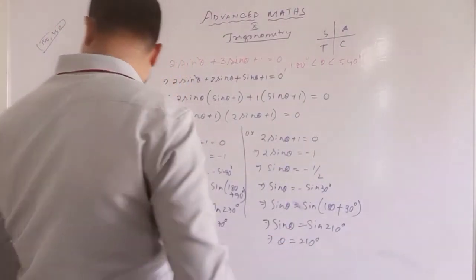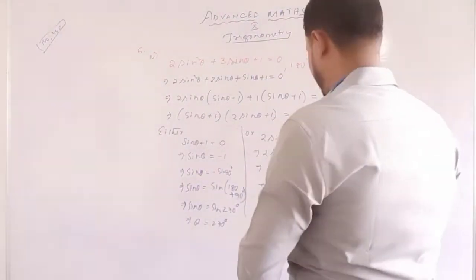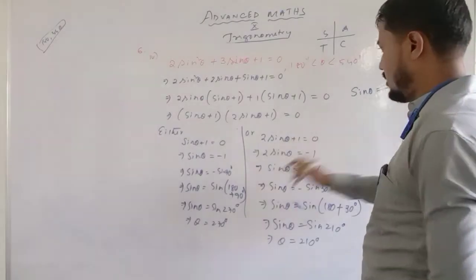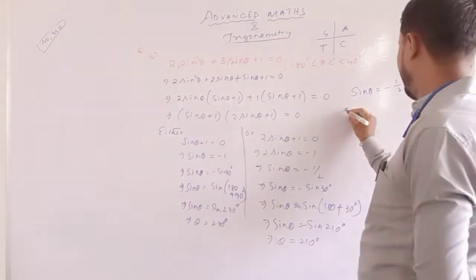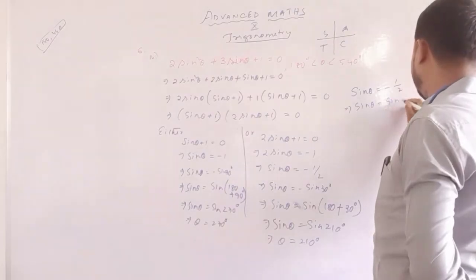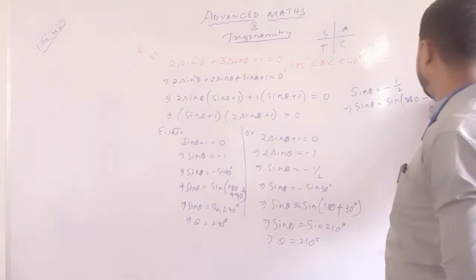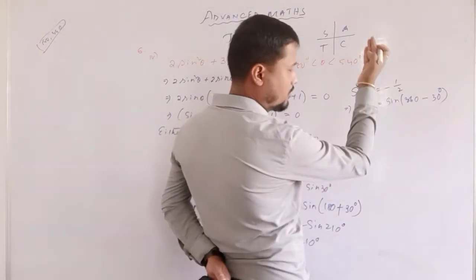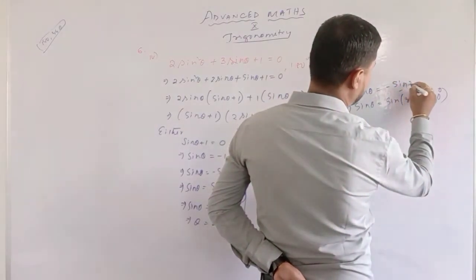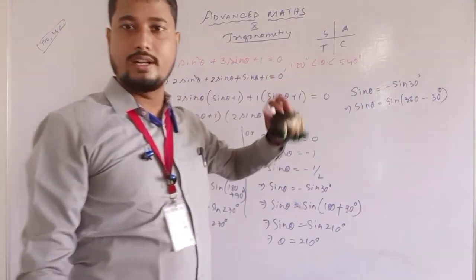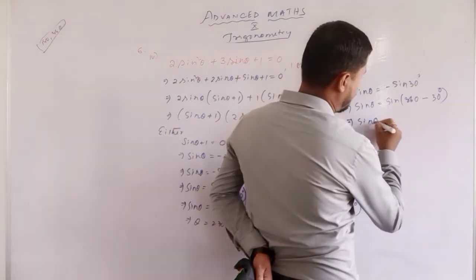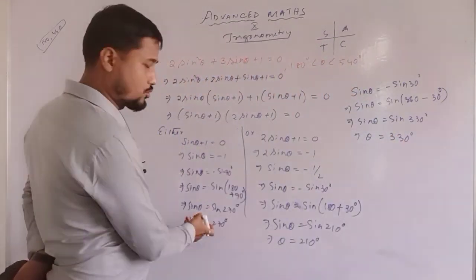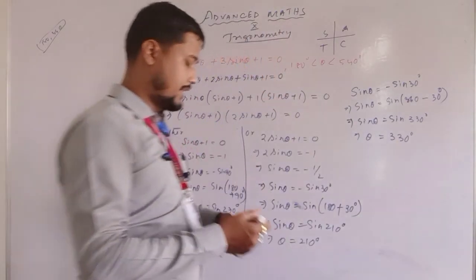So we have 210°. Now for the next value: sinθ = -1/2. One value is 270°, another is 210°. Another: sinθ = sin(360° - 30°) = sin(330°) — that is the fourth quarter where sine is negative. So sinθ = sin(330°), implies θ = 330°. The three values are: 270°, 210°, and 330°.